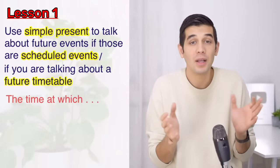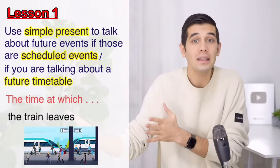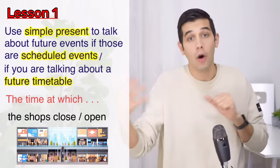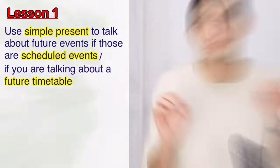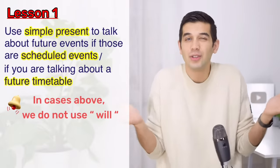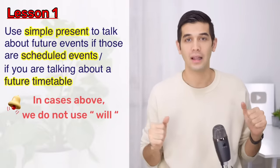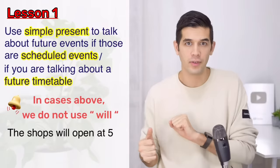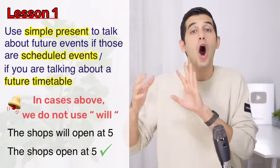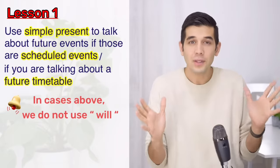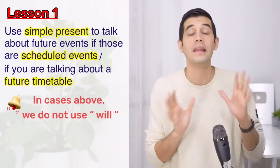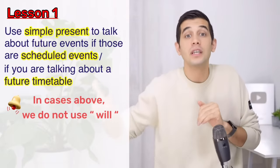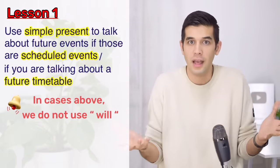For example, the time at which the train leaves, or the bus arrives, or the movie starts, or the shops close or open. Pay attention — in these cases, we do not use will. We don't say 'the shops will open at 5.' We normally say 'the shops open at 5.' So that was lesson number one: use simple present to talk about future scheduled events or timetable.